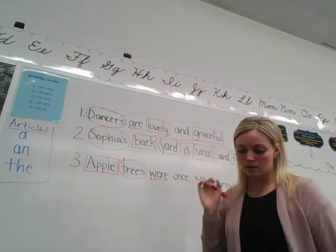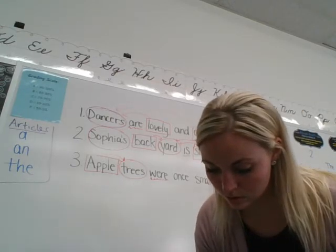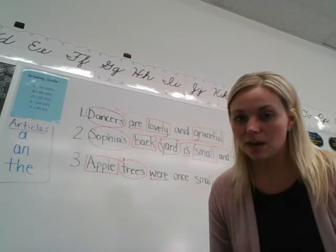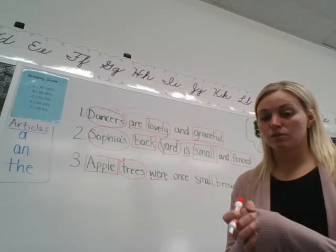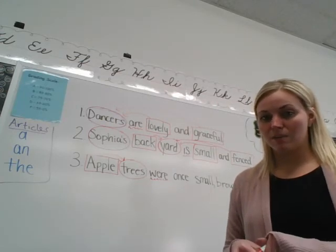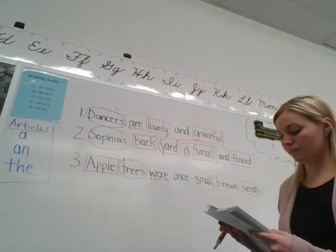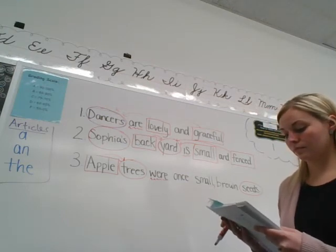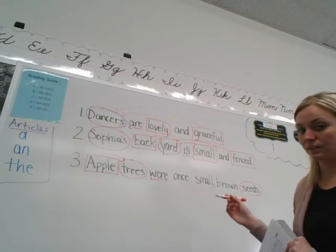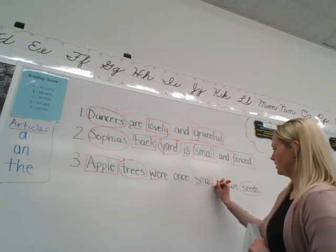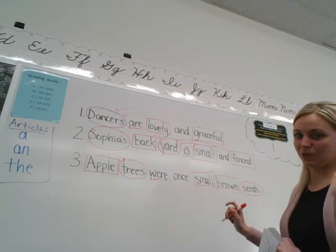Now make a box around your adjectives — remember, adjectives are describing words and they describe the nouns. Pause me and make a box around your adjectives. You should have made a box around 'small' and 'brown' because they're small and brown seeds. The seeds are small and they are brown, so they're also describing the seeds. Make an arrow from them.